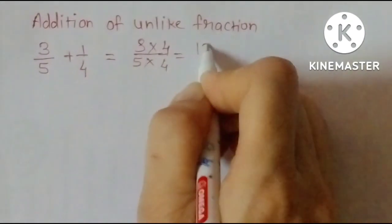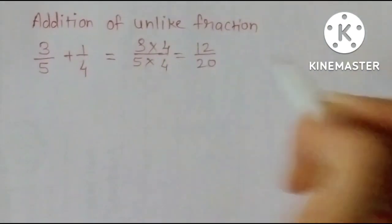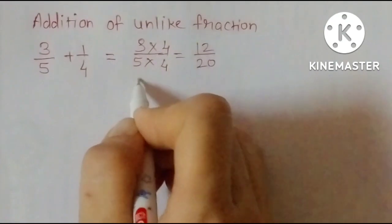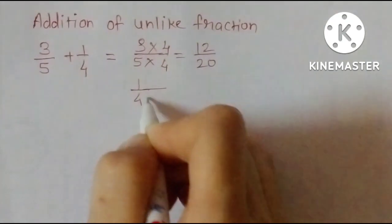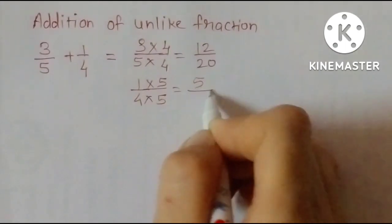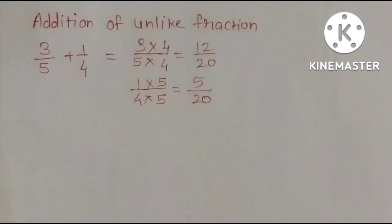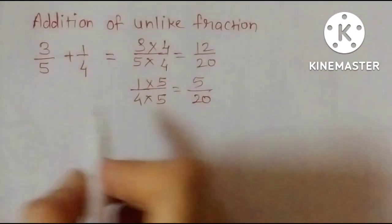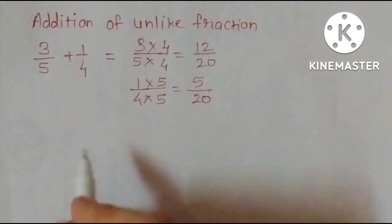3 times 4 is 12, 5 times 4 is 20. Next, 1 upon 4 into 5. 1 times 5 is 5, 4 times 5 is 20. The denominators are same.